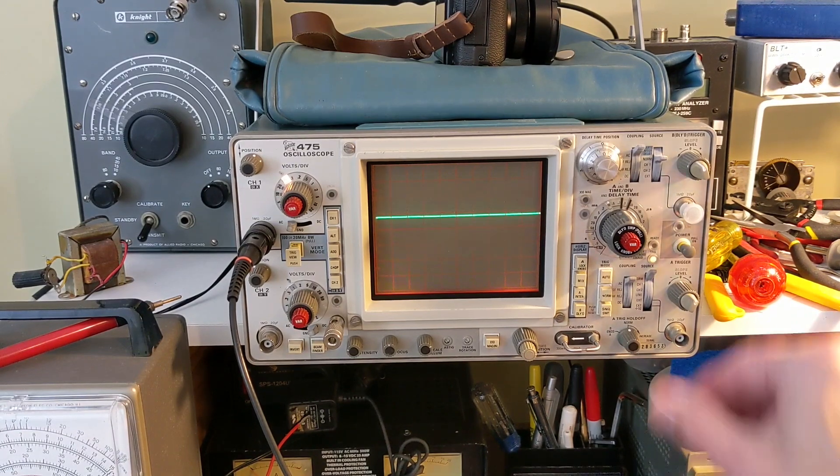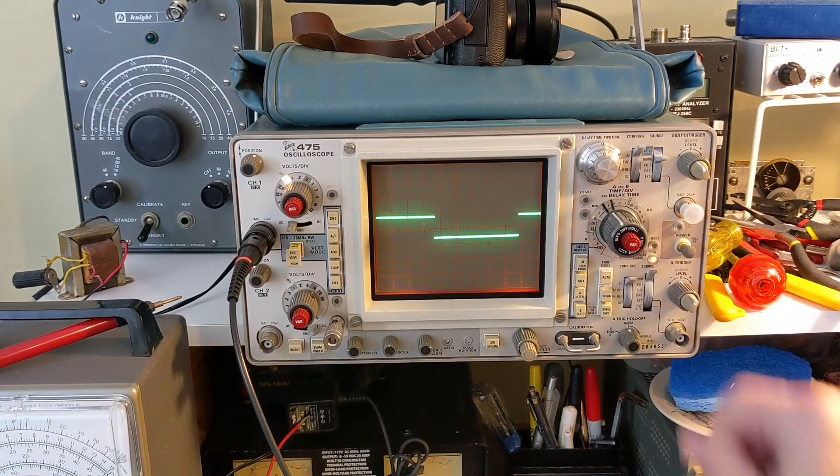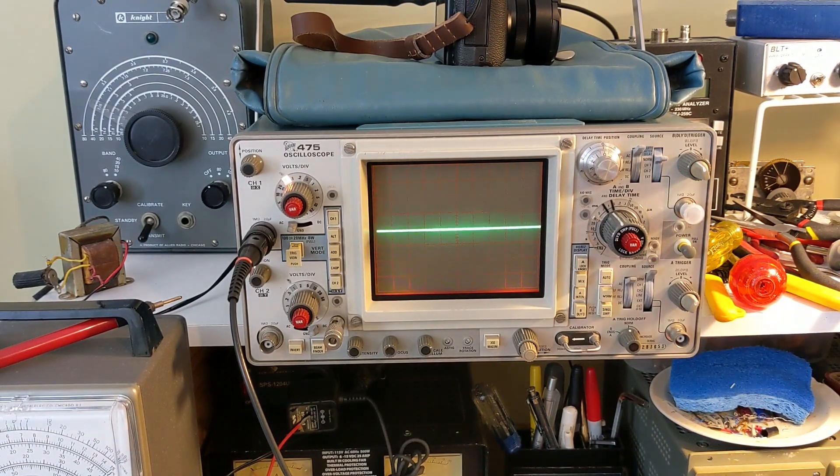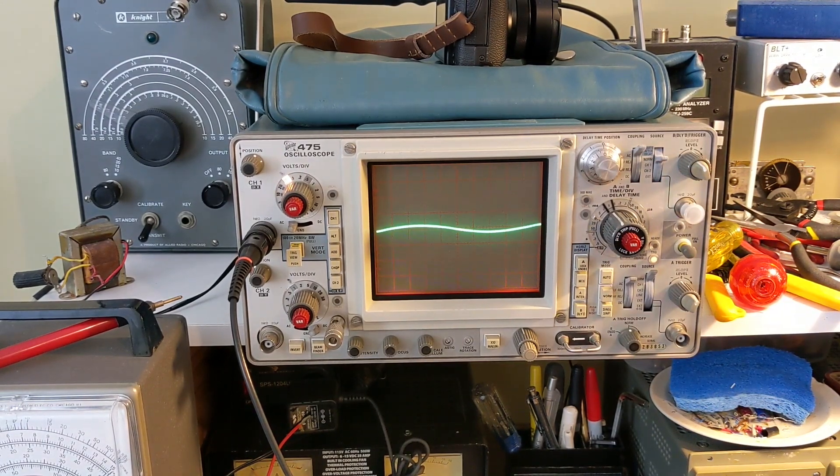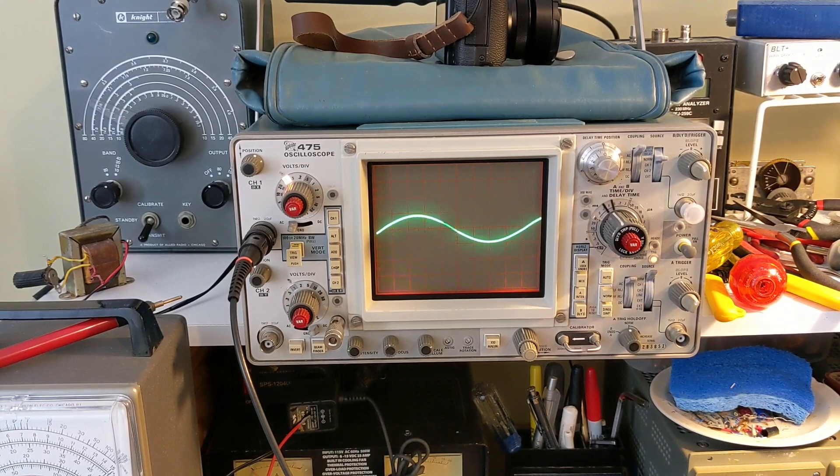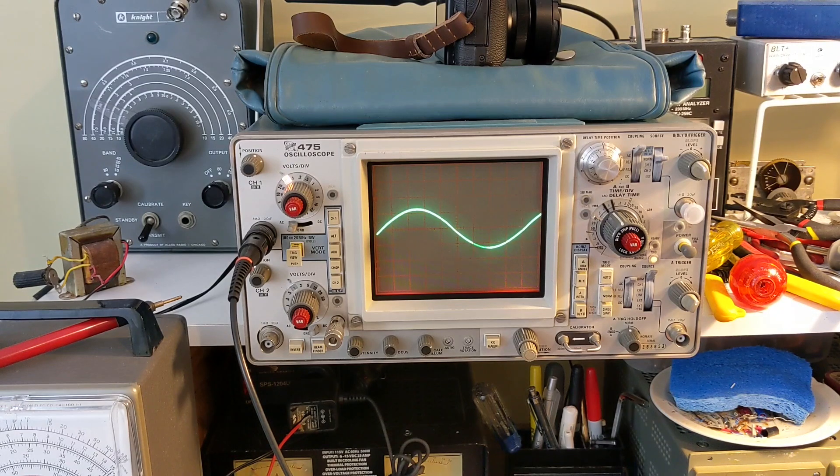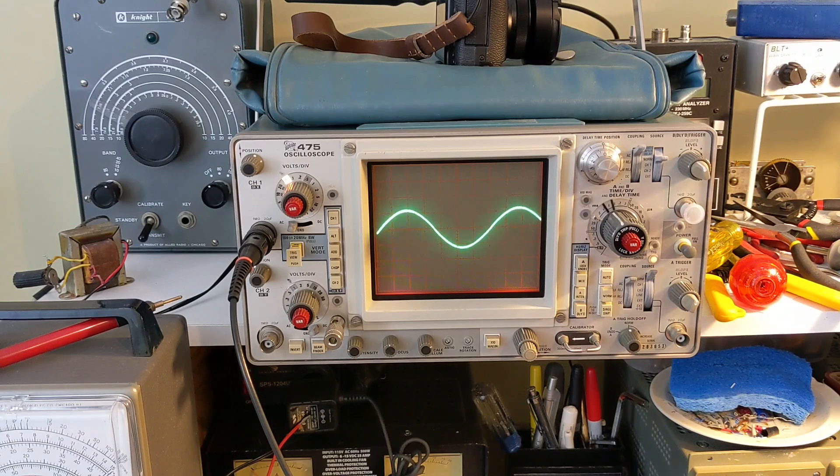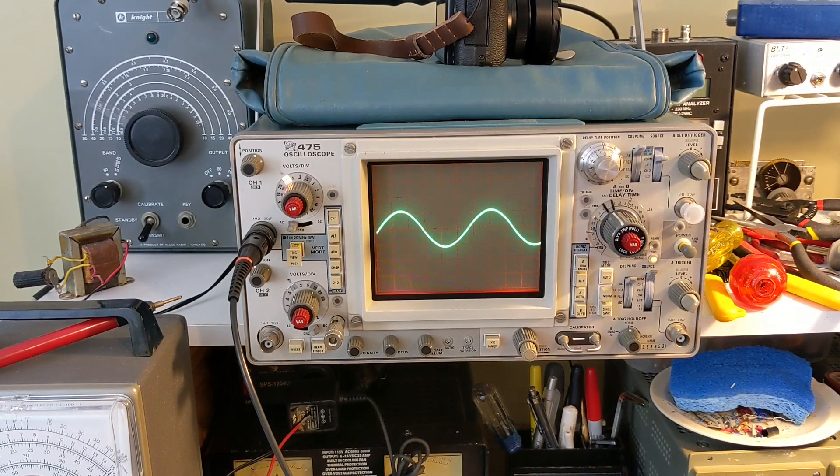Let's look at its sine wave output here. Sine wave output's a little bit lower. It has a bit of a square wave sound to it, but you can see on the scope, it is a sine wave.